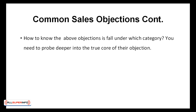Lack of trust: trust comes down to whether or not the prospect believes you can do what you say you can do. Lack of money: you need to recognize if this is a genuine objection. An obstacle can be overcome; a genuine objection can't.